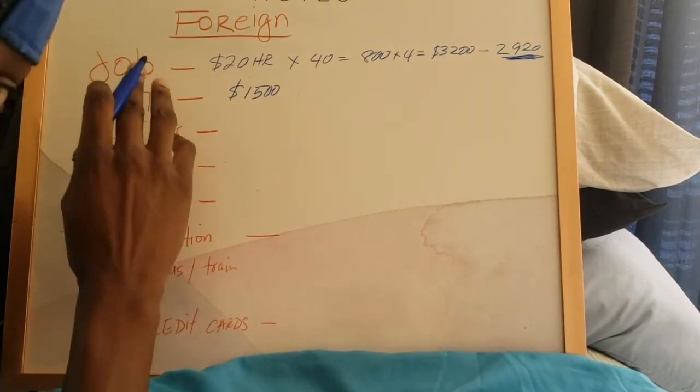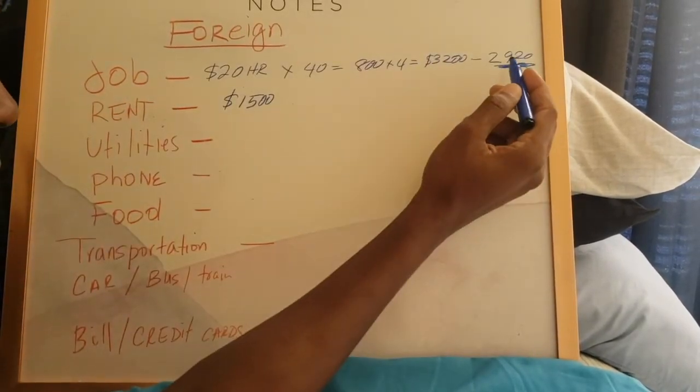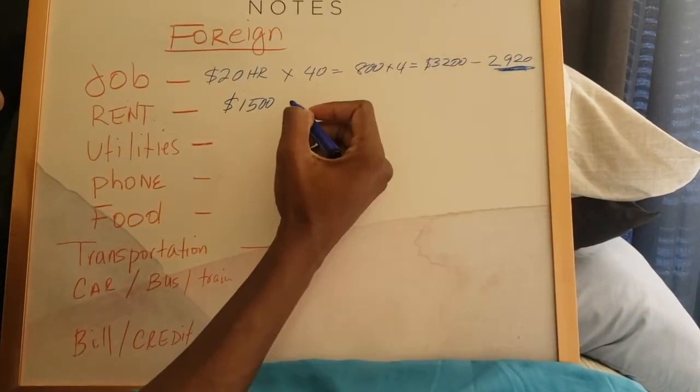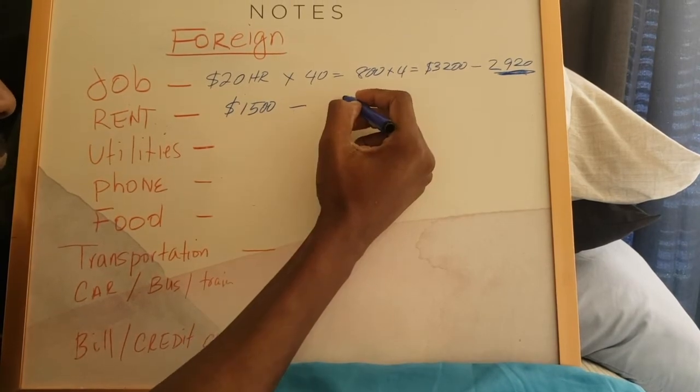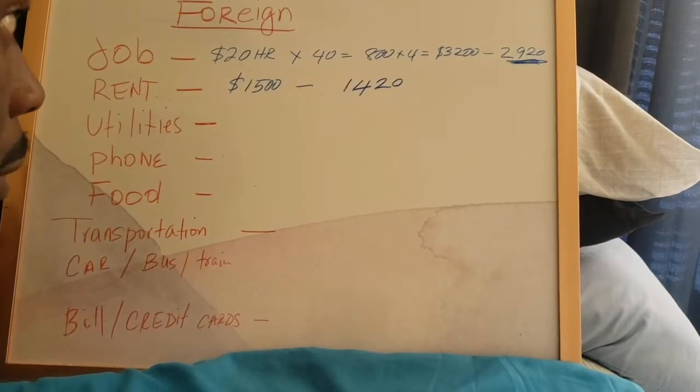Remember, this is just the average. So subtract this $1,500 from this amount. You're going to end up with $1,420. Look how the money's gone down already.